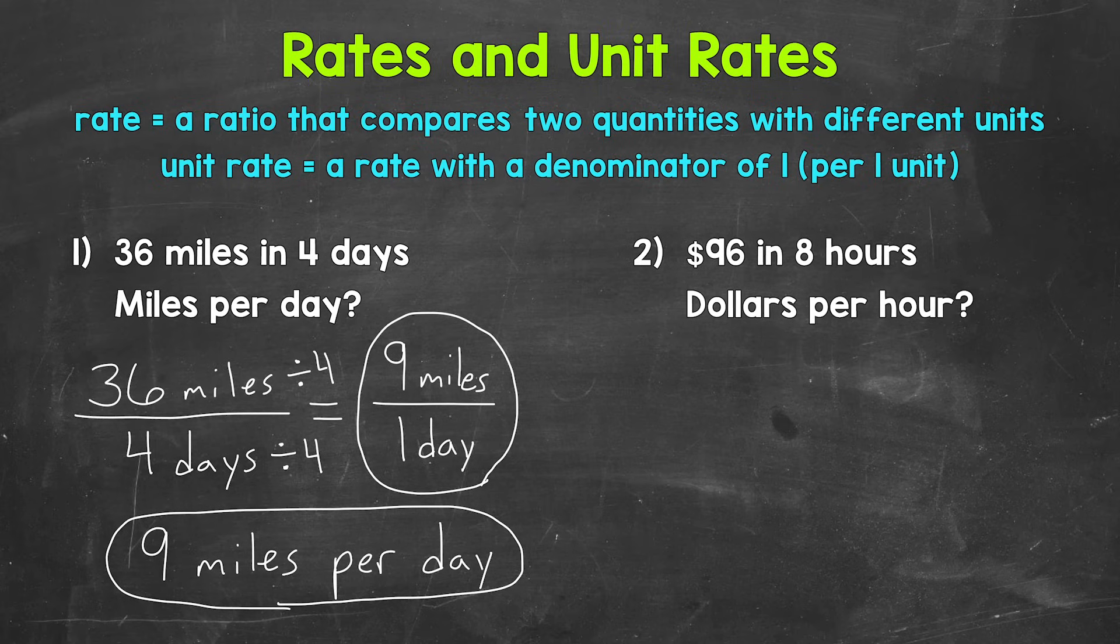So our original rate was 36 miles in 4 days. And then we found our unit rate. We did that by getting our denominator to equal 1. We did that by dividing by 4. That gave us 9 miles per day.